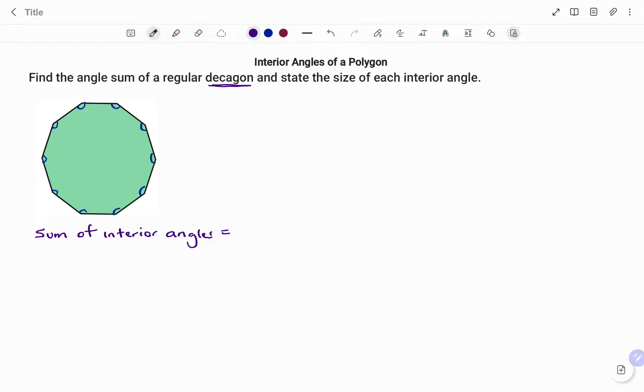The formula for finding the sum of the interior angles of a regular polygon is: we have the number of sides minus 2 times 180 degrees. The number of sides in this case, it's a decagon, so that's 10 minus 2 times 180 degrees.